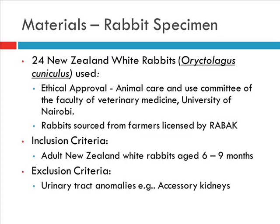For the rabbit specimen, I used a similar number — 24 — from New Zealand white rabbits. Ethical approval was sought from the animal care and use committee of our veterinary department. The rabbits were only sourced from farmers licensed by the Rabbit Breed Association of Kenya. These farmers are trained and only breed pure breed New Zealand white rabbits. I only used adult rabbits aged between 6 to 9 months, and any kidney that showed urinary tract anomalies, such as accessory kidneys, was excluded.